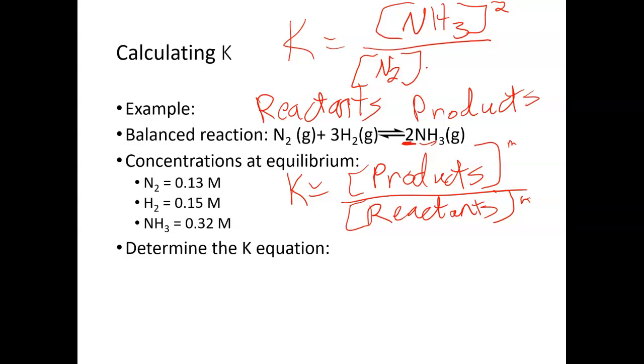Nitrogen has a coefficient of 1, so the exponent's going to be 1. And our hydrogen, if we look in the balanced equation, has a coefficient of 3, so its exponent is 3.